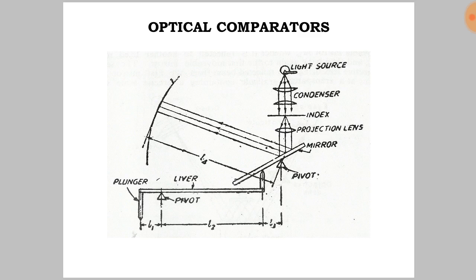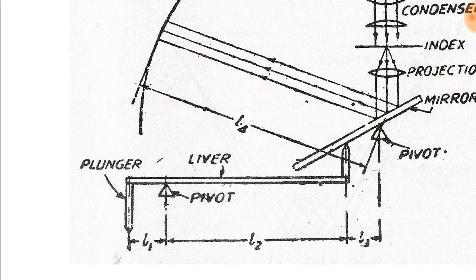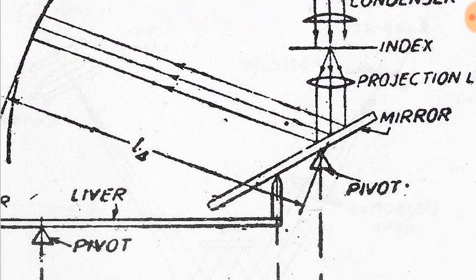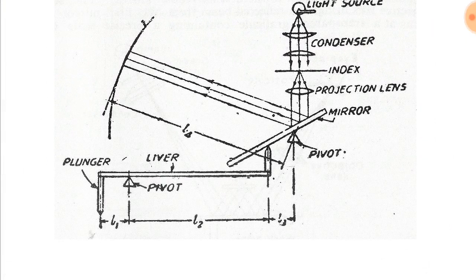In optical comparators, small displacements of the measuring plunger are amplified by a mechanical system consisting of pivoted levers. The amplified mechanical movement is further amplified by a simple optical system involving projection of an image. The usual arrangement is such that the mechanical system causes a plane reflector to tilt about an axis.